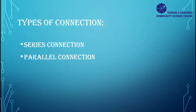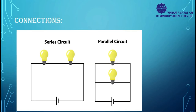Next we will talk about connection. There are two types of connection: series connection and parallel connection. In series connection, all components are connected in such a way that there is only one path through which current can flow. In parallel connection, there are multiple paths through which current can flow.